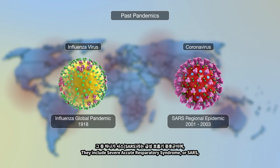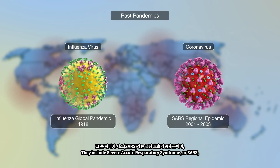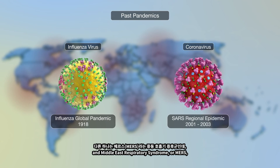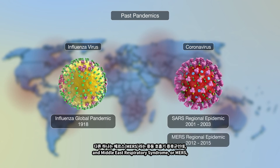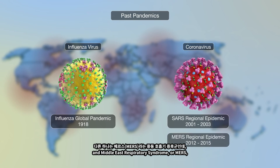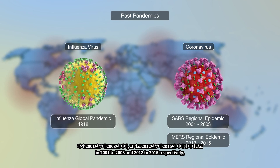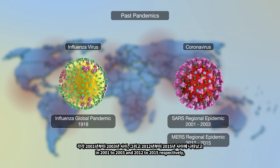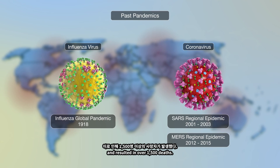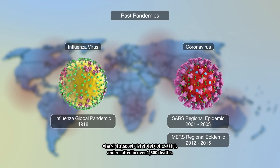These include Severe Acute Respiratory Syndrome, or SARS, and Middle East Respiratory Syndrome, or MERS, in 2001 to 2003 and 2012 to 2015, respectively, and resulted in over 1,500 deaths.